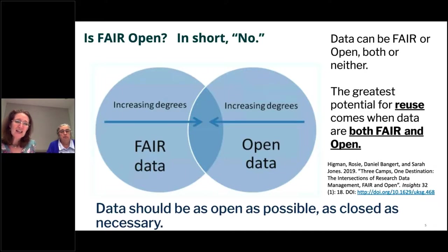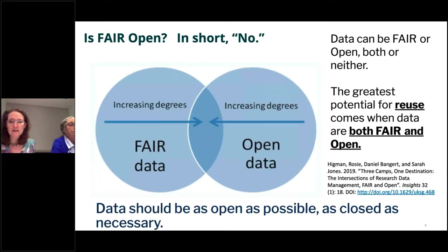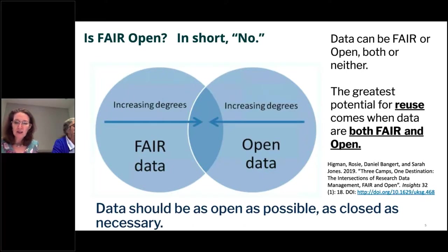One really important thing to highlight is the difference between open and FAIR. Not all data can be open, and FAIR data isn't automatically open. FAIR — meaning findable, accessible, and well-documented data — does not mean that protected information is expected to be open. It's possible for FAIR data to actually be closed. We do want data to be as open as possible and as closed as necessary, but it's important to identify this continuum.